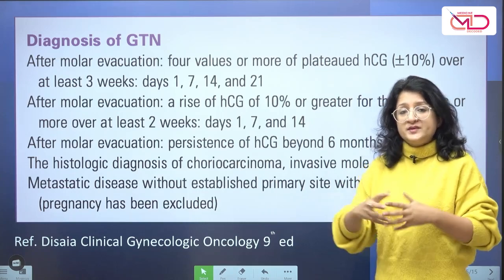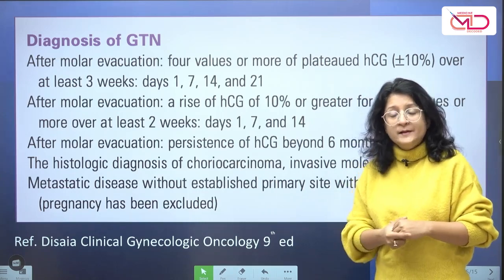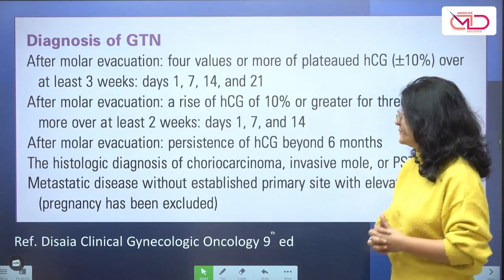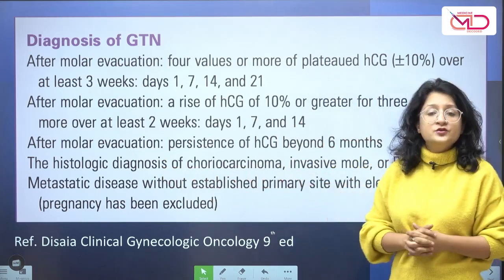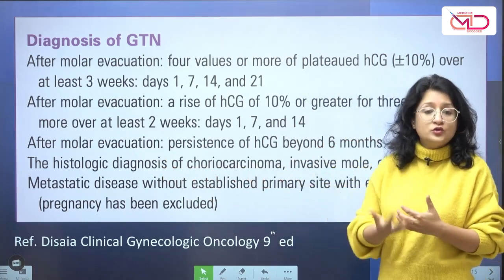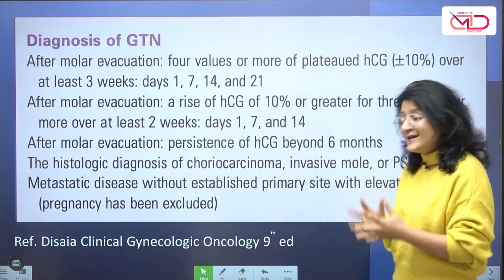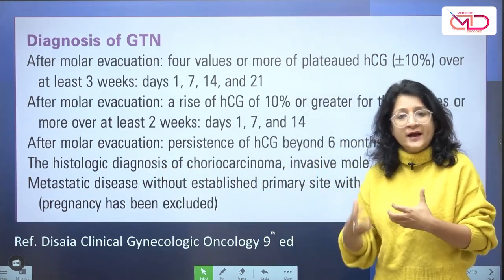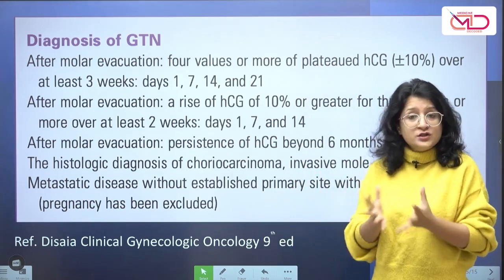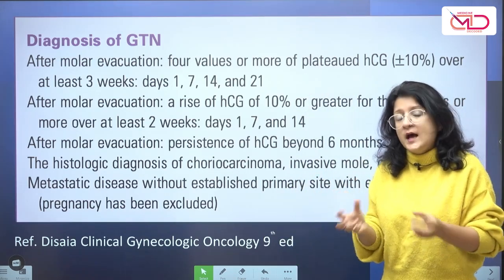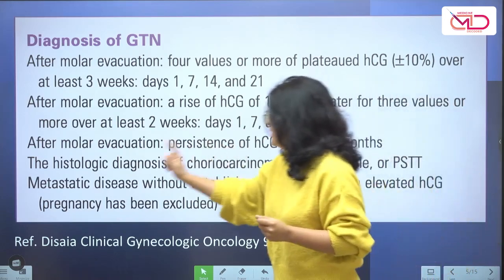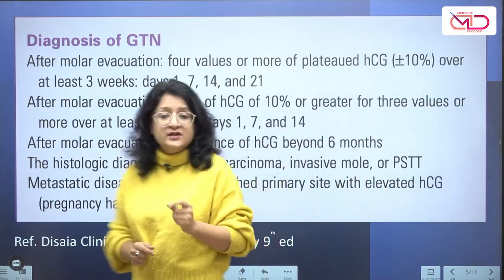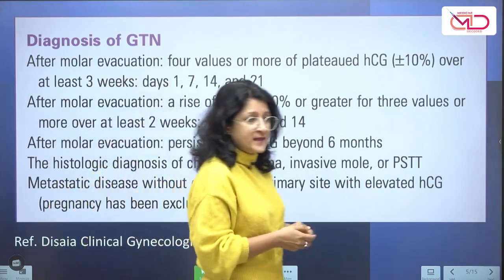If a woman presents with abnormal bleeding and a curettage or endometrial sampling has been done, a histological diagnosis of choriocarcinoma or invasive mole is also possible. Sometimes there can be direct evidence of metastatic disease in the vagina or lungs without an established primary site in the uterus, and in those cases the diagnosis can be established with elevated HCG levels.